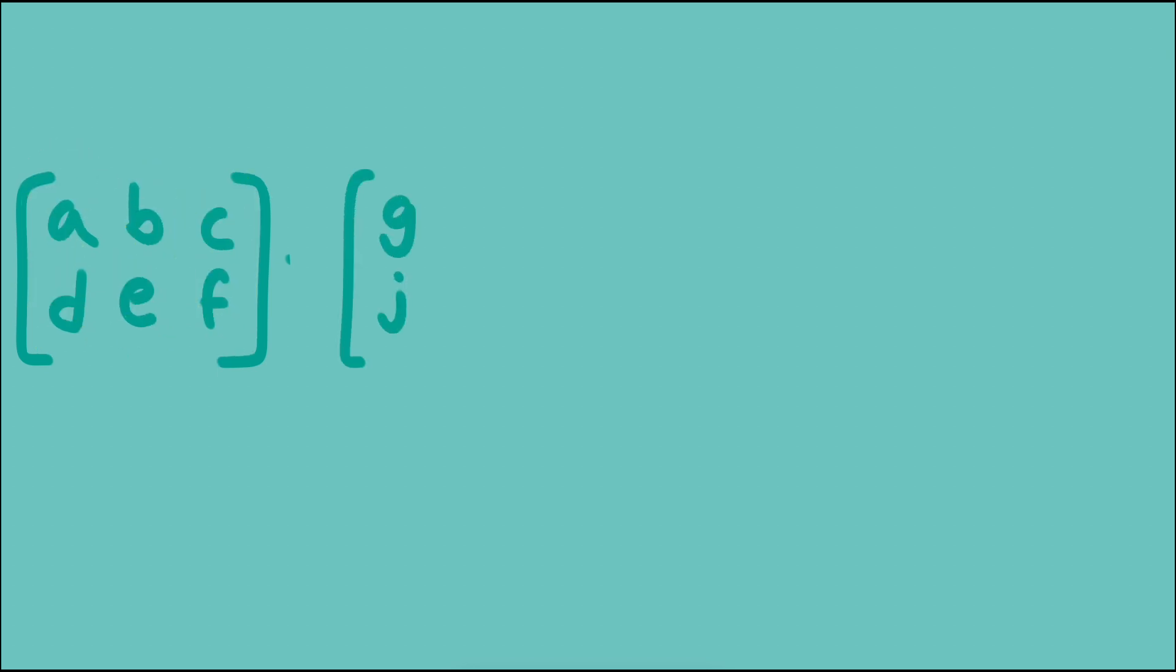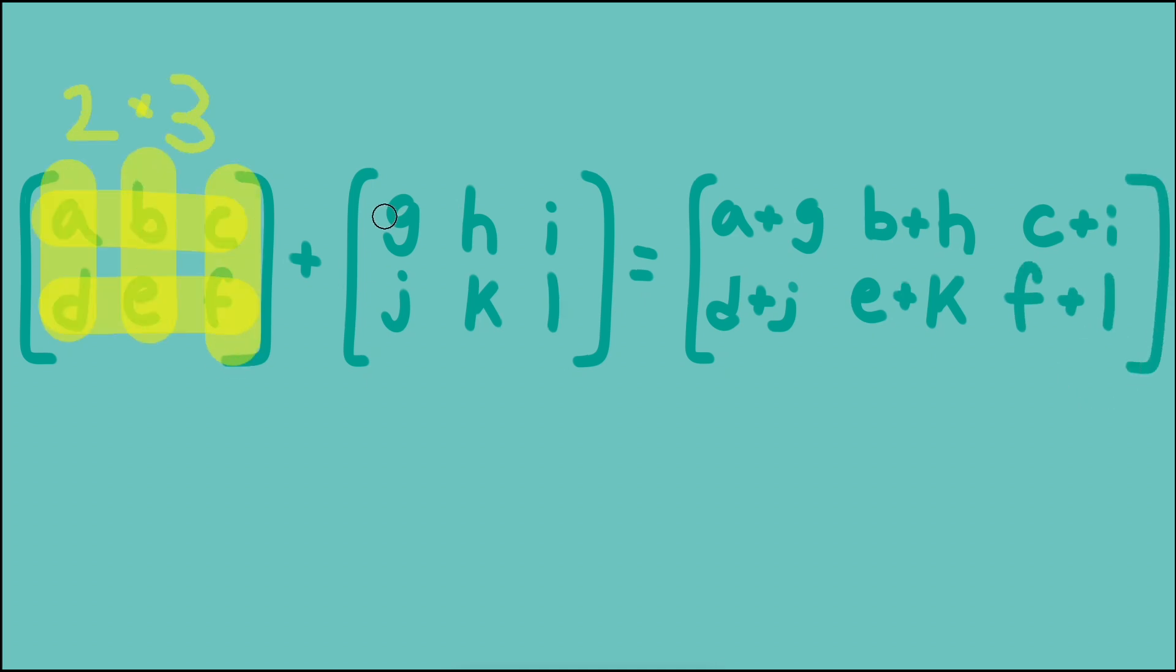Matrix addition and subtraction are done component-wise, meaning the top left entry is added to or subtracted from the top left entry in the other matrix, and so on for each corresponding entry. This means that in order to add or subtract matrices, they need to have the same dimensions or size.